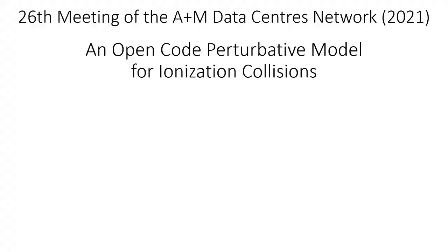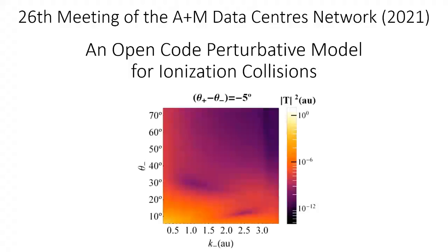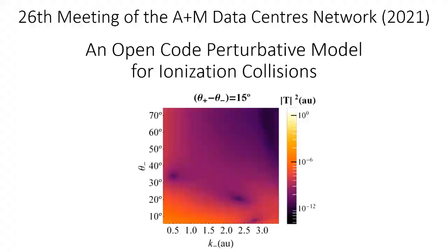Here we are at the 26th meeting, where my talk will deal with the provision in an open source context of a computer program based on a perturbative model for the study of ionization collisions. This communication will be divided into two parts. First, I want to talk about the Bank of Data and Codes and the concept of open source. As an appetizer, I show a recent calculation for the ionization of hydrogen molecules by positron impact.